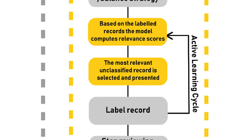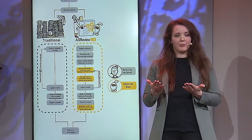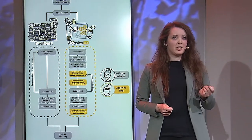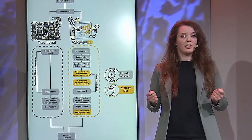Now ELAS goes to work for you. ELAS calculates probability scores for all the data you haven't seen yet — which is all the papers except for the priors you provided. Using this information, ELAS gives you the paper it thinks has the highest probability of being relevant.